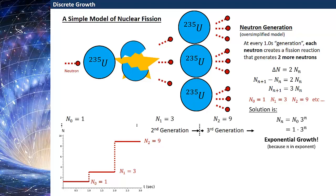We call this exponential growth because the n is in the exponent. The n is the thing keeping track of time — as time goes forward, that's the number of generations, and that's in the exponent, so we call it exponential growth. This is what would happen if we had discrete growth of the number of neutrons in each generation, but that's not always going to be a good model for what we're looking at.